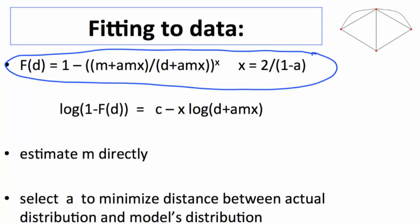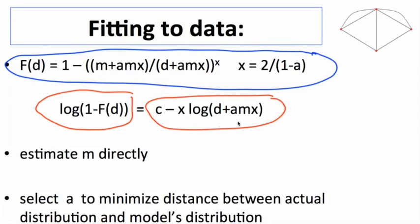It's easy to do this in a log-log world, take log of each side, and actually bring the f over here and then take log of each side. What we're going to end up with is log of 1 minus the distribution function is proportional to c minus x log of d plus amx.